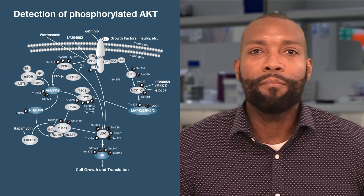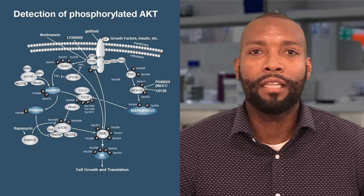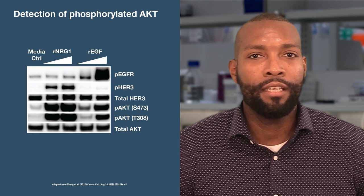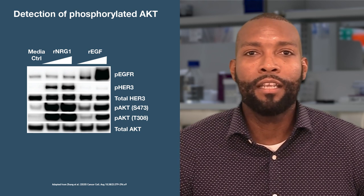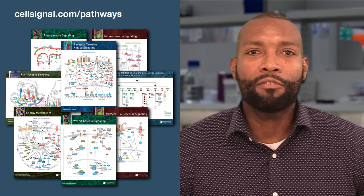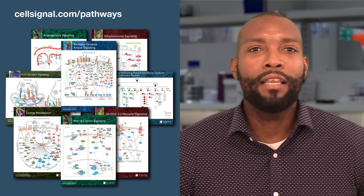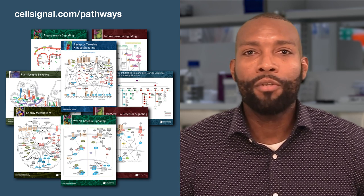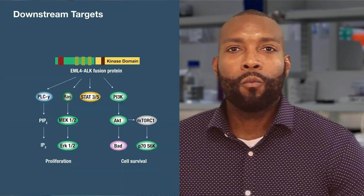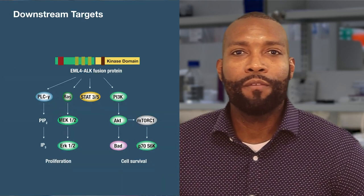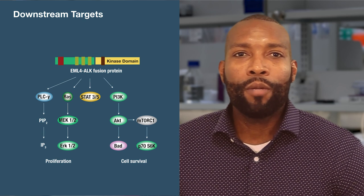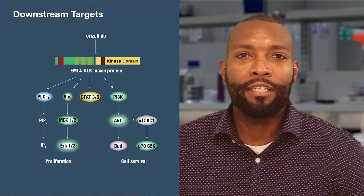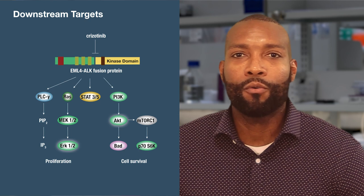Activated surface receptors may turn on one or more pathways, depending on biological context. By selecting antibodies for intracellular signaling proteins, such as AKT, you can investigate which pathways are responding. Reading the literature and checking pathway diagrams from cellsignal.com/pathways can give you an idea of the logical relationships between proteins in a pathway and help you generate hypotheses for your experiment. Once you've identified the pathway or pathway branch you want to investigate, you can select targets. One approach is to treat your sample with an inhibitor that targets an upstream node and read out with one or more antibodies specific for downstream targets in different branches or pathways.